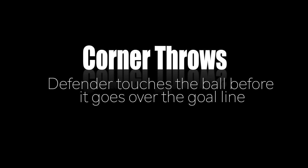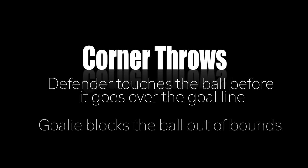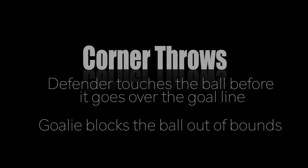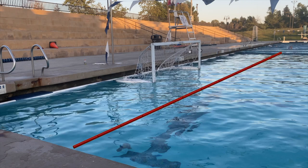I'm David Farkas with Shaquatics Water Polo, and today we're going to talk about corner throws. A corner throw can be awarded if a defender touches the ball before it goes over the goal line, or if the goalie blocks the ball out of bounds. You will take the corner throw at the two-meter line on the side where the ball went out of bounds.